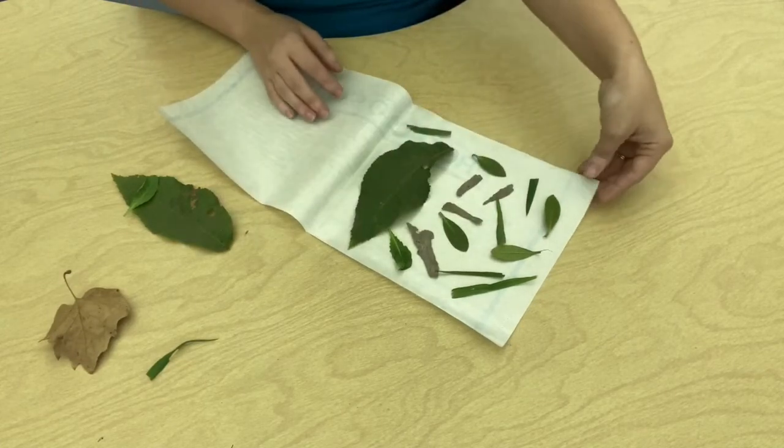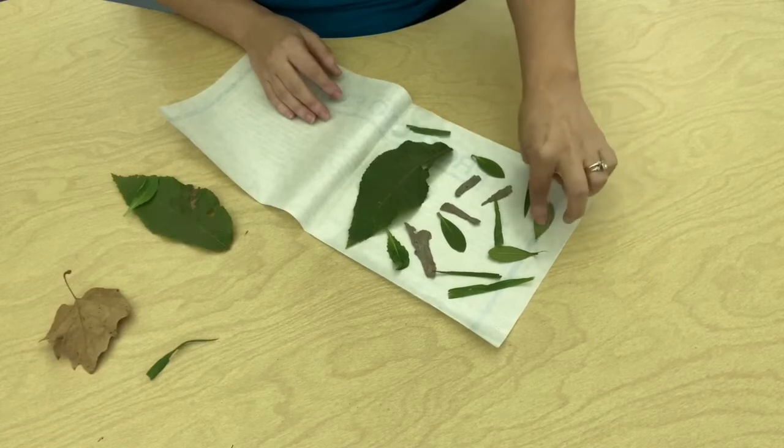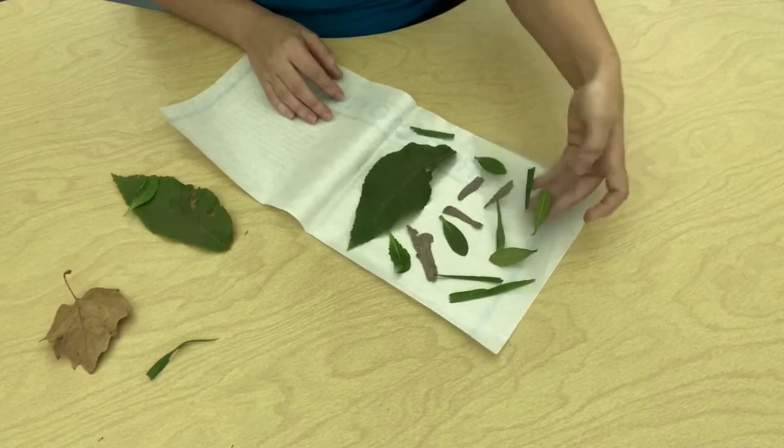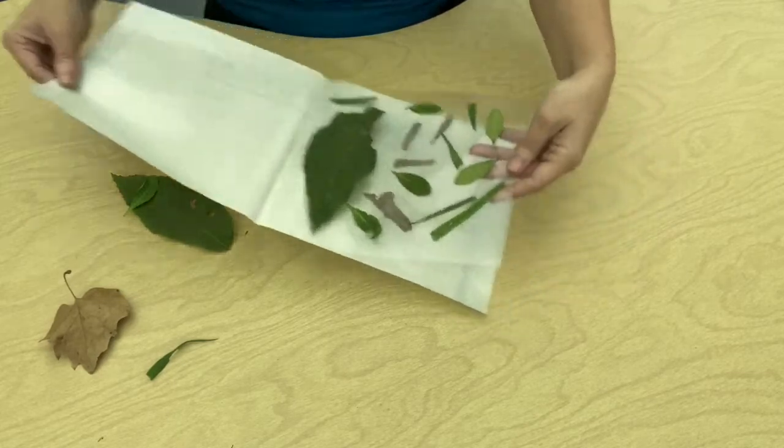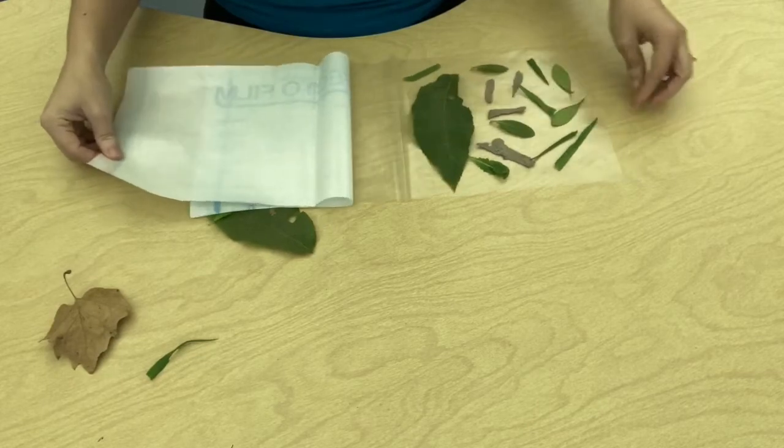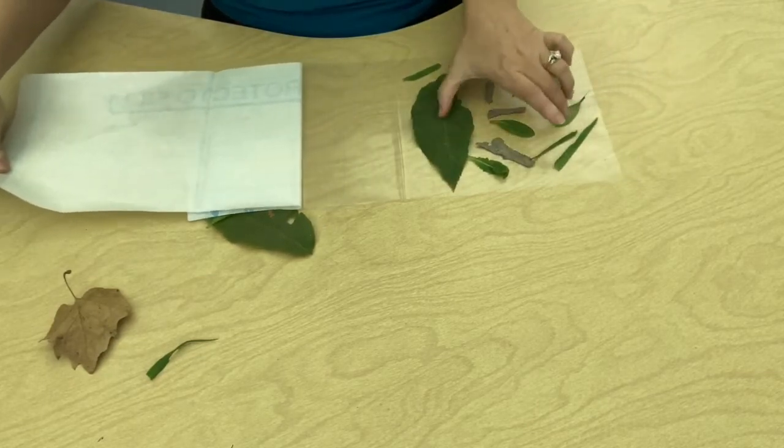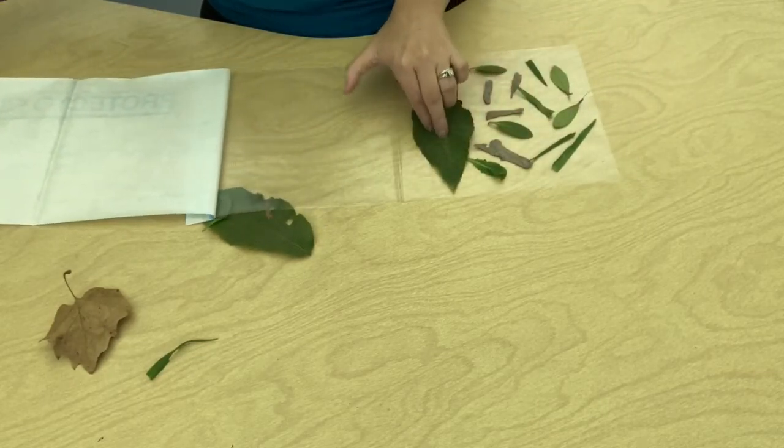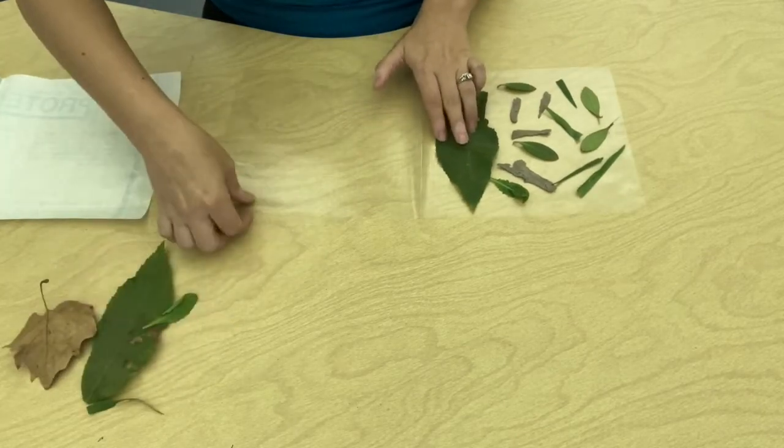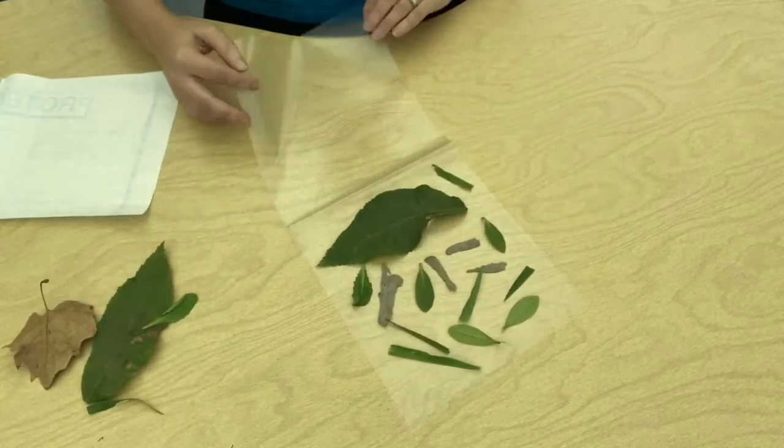Okay, now that we have our things stuck into their places, the next thing we're going to do is have mom and dad help you, and we're going to fold over the other part of our paper. Hold that down and have mom and dad pull the other sticky part of the paper off, and now we're going to fold it over the top and kind of make a sandwich with it.